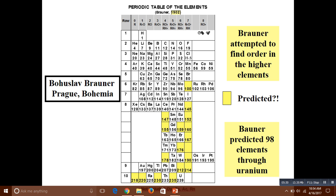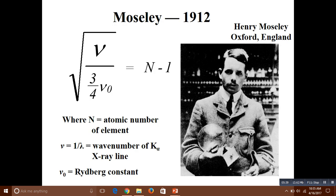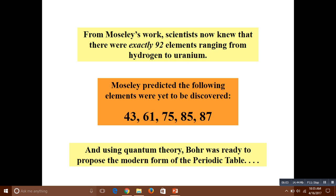Most of the limitations of Mendeleev's table were resolved by 1913. The modern periodic law, combined in 1869 and refined later, states that the properties of elements are a periodic function of atomic number. Elements could then be assigned a position in the periodic table based on atomic number, using quantum theory to propose the modern form of the periodic table.